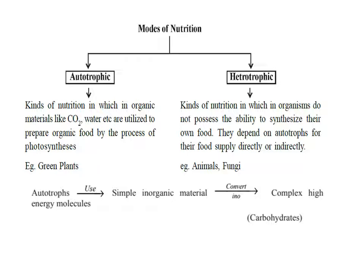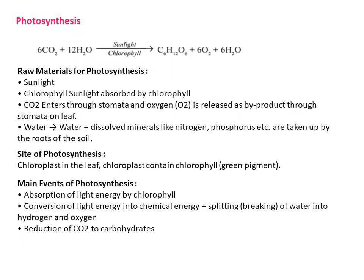Now we are going to see one of the processes of autotrophic nutrition. Autotrophs are of two types: chemo-autotroph and photo-autotroph. In grade 10, in detail, we are going to see the photo-autotrophs, that is photosynthesis. Photosynthesis is the synthesizing of food or glucose in the presence of sunlight. On the screen you can see the equation of photosynthesis.